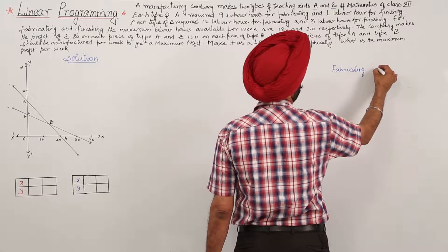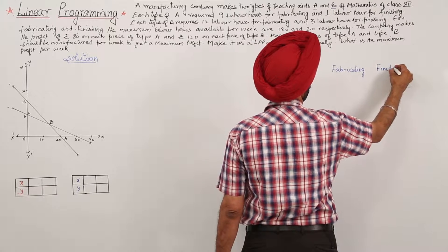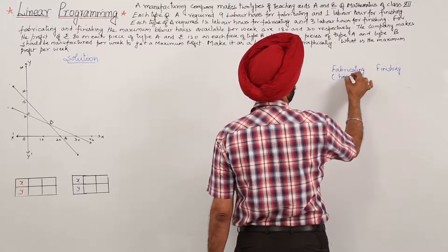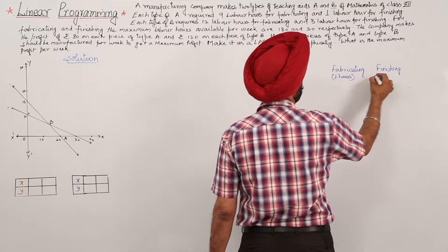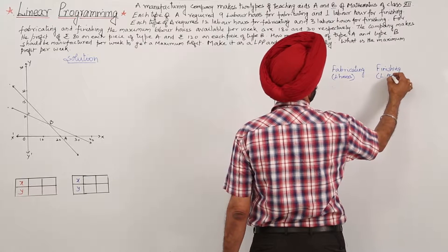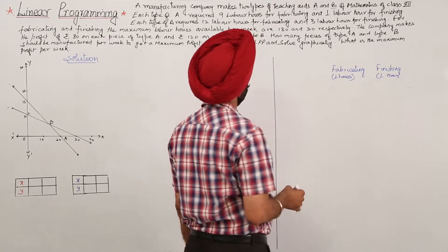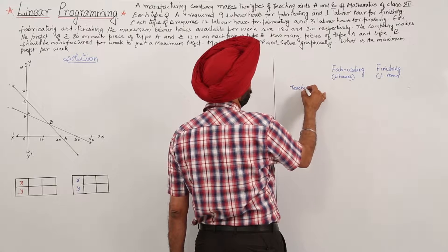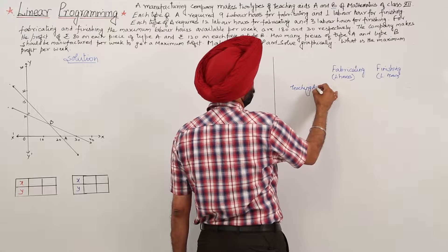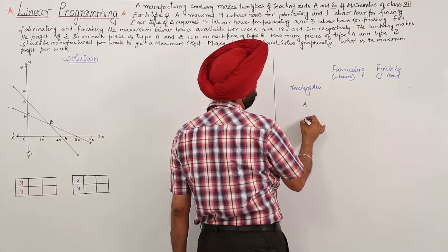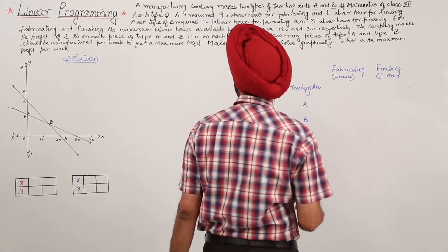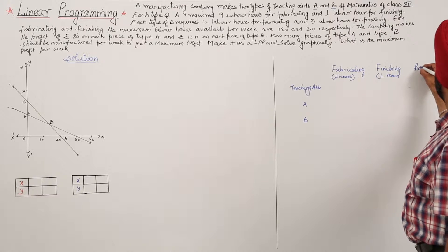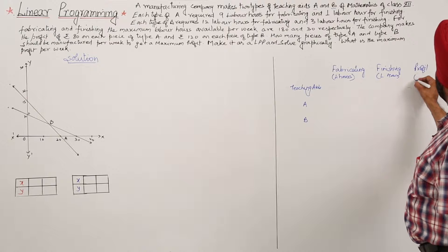We set up a table with columns for fabricating and finishing labour hours, for teaching aids A and B, and for profit.